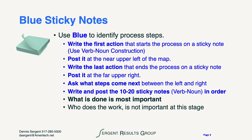This is where we ask the subject matter experts to use blue sticky notes to identify the process steps. It's important to remember that verb-noun construction is critical for depicting the flow and the action in the process. We ask that they write the first action that starts the process on a sticky note — only one member of the team needs to do that — and post it at the near upper left of the map. Similarly, write the last action that ends the process and post it at the far upper right. Then fill in the gaps with the most important steps that occur between the first and the last step. What's done is most important; who does the work is not important at this stage.